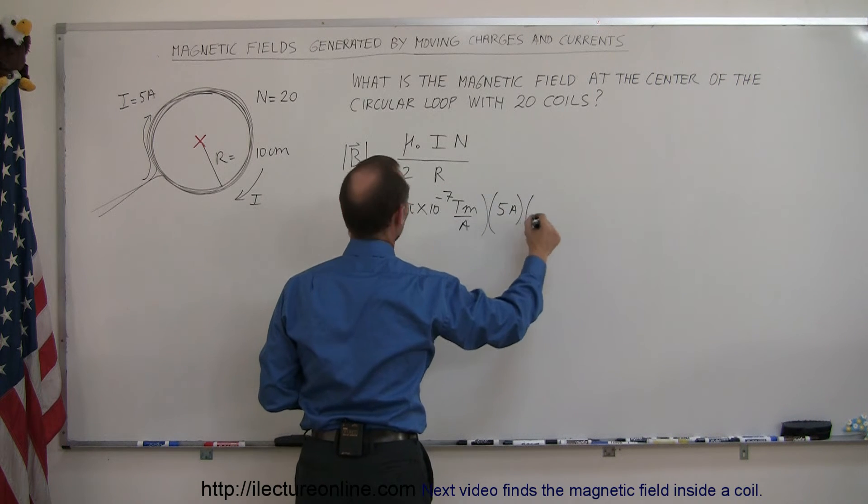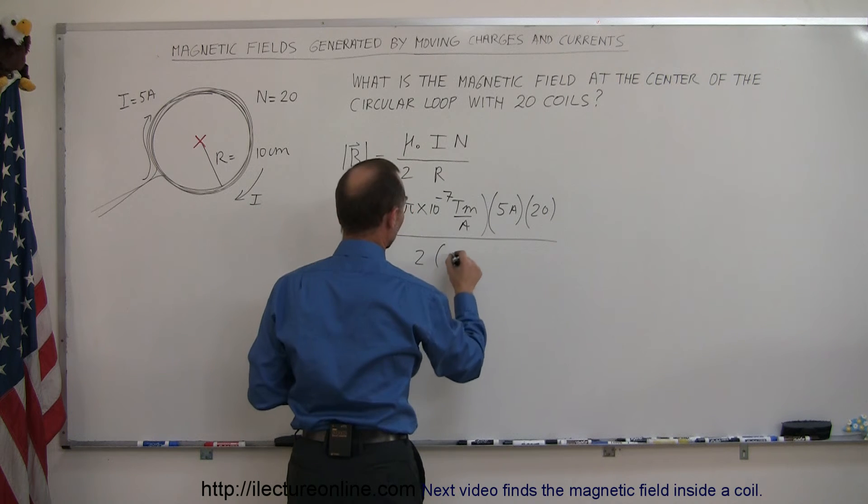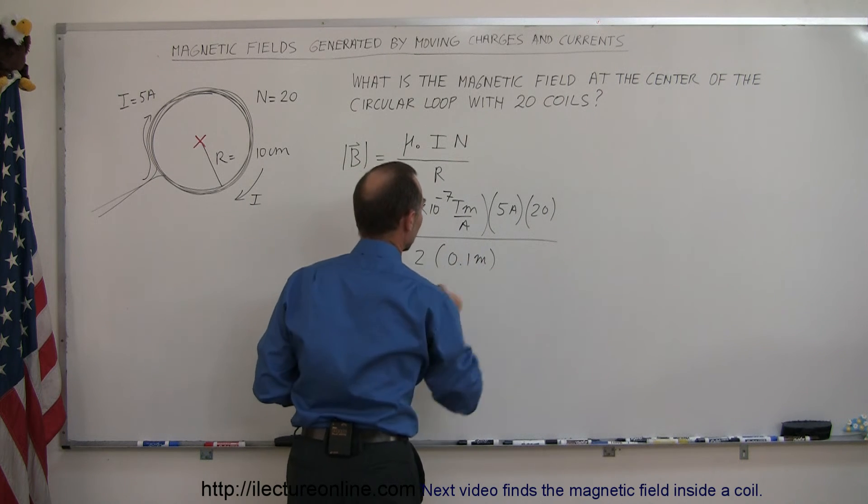The number of loops in this case is 20 and we divide that by 2 times the radius which is 10 centimeters converted to meters is 0.1 meters.